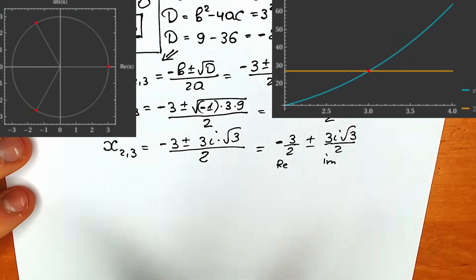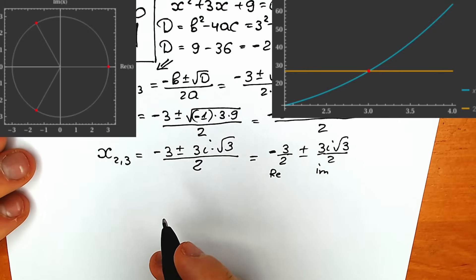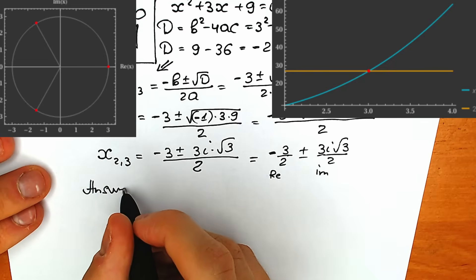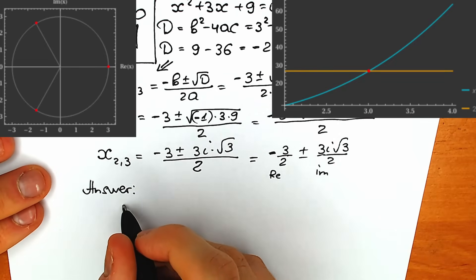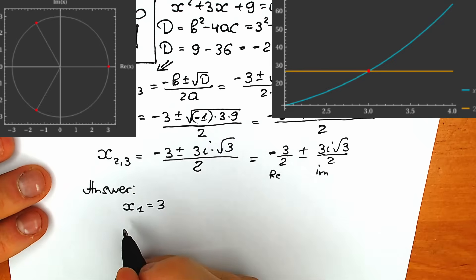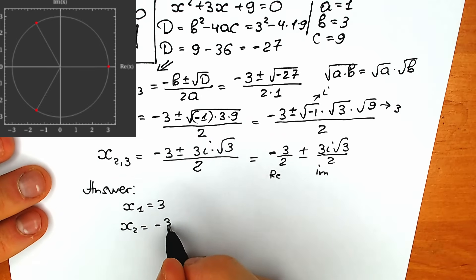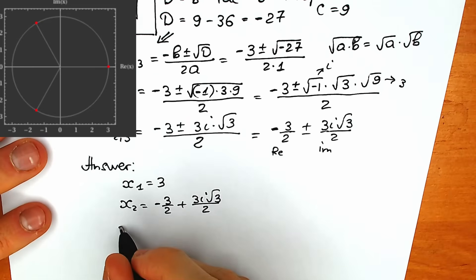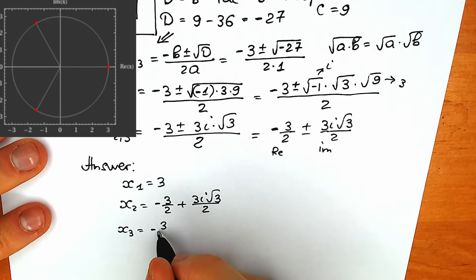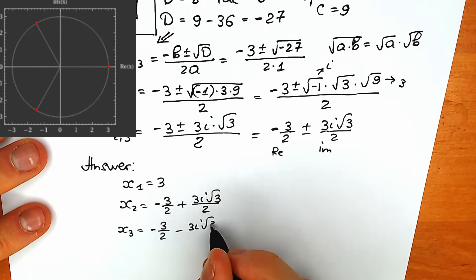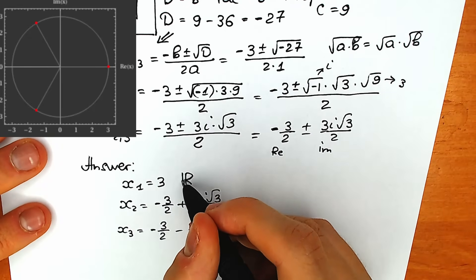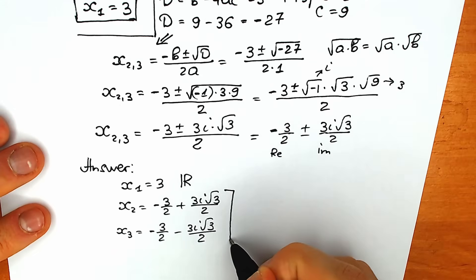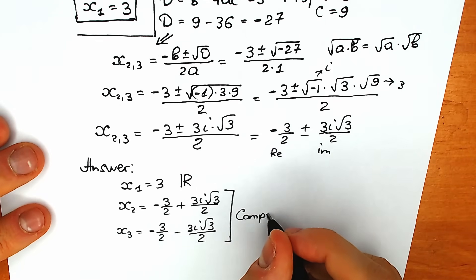Now we can see a graph — you can see the points of intersection, which is great to see from a geometric perspective. Our final answers are: x₁ equals 3 (real number root), x₂ equals minus 3/2 plus 3i√3 over 2, and x₃ equals minus 3/2 minus 3i√3 over 2. These last two roots are complex.